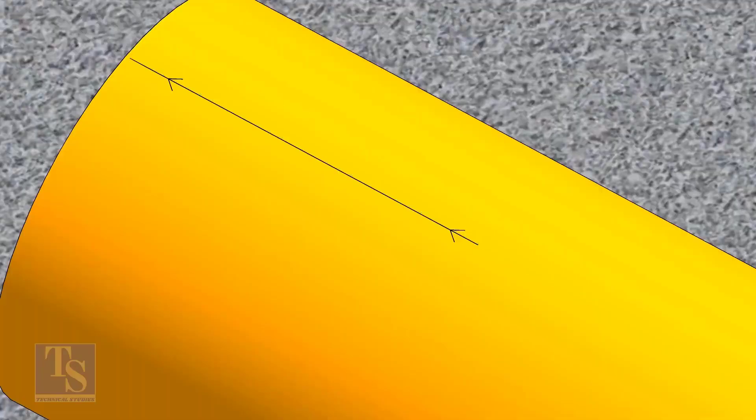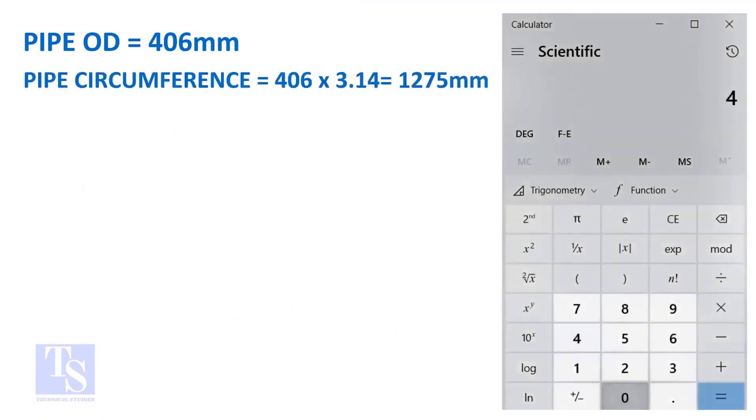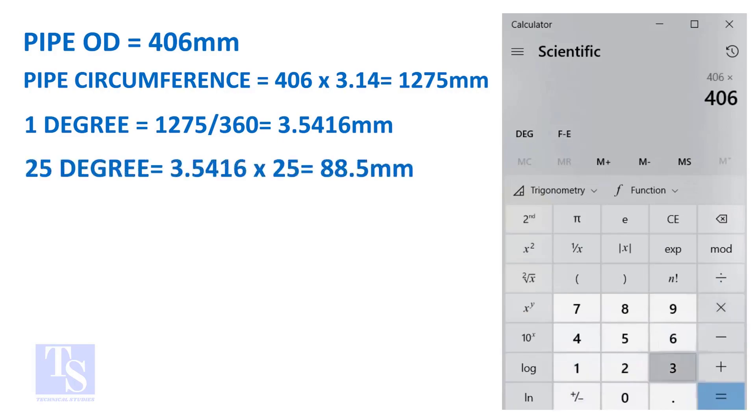Let us calculate the circumferential distance or arc length for 25 degrees. Multiply the OD by 3.14. You will get the circumference of the pipe. Divide the circumference by 360, you will get the arc length of 1 degree. And finally, multiply the 1 degree arc length by 25. Now you have the arc length of 25 degrees. You can apply this formula to get the arc length of any degree.